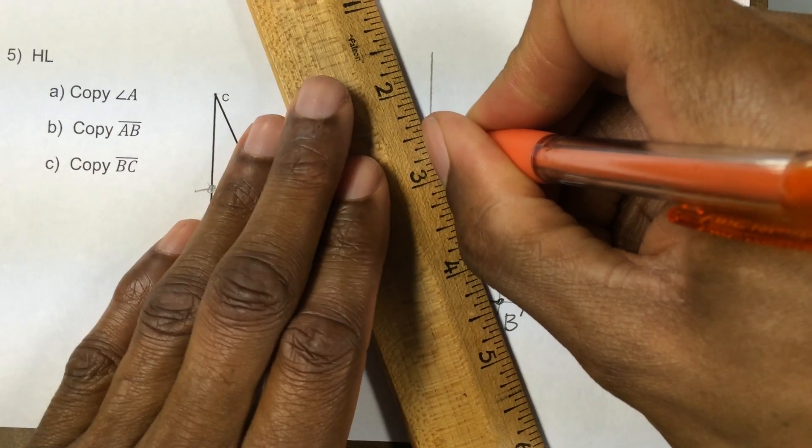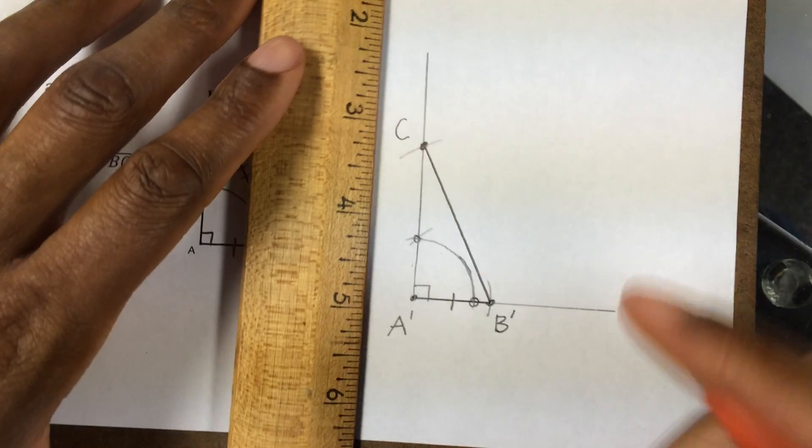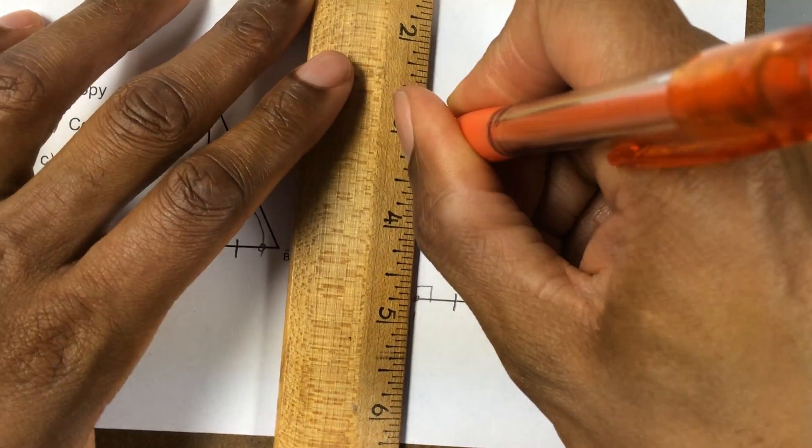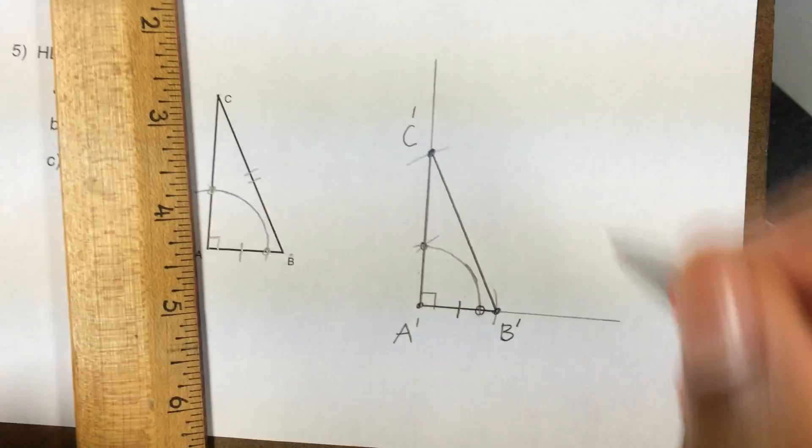And I can go ahead and draw this triangle solidly. Okay, I'll call it C prime.